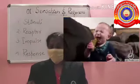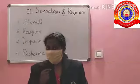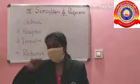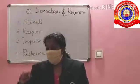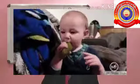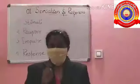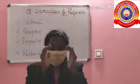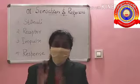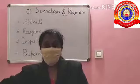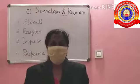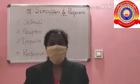When the tamarind touches the tongue, the message travels through the impulse and reaches the brain. It is the brain that responds to it — look at the expressions of the baby! That means the cell contains a special type of receptor which receives the stimuli, and these stimuli give rise to a response. These responses reach the brain through electric impulses.